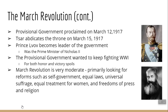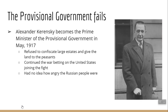The provisional government wanted to keep fighting in World War One. Even though so many people were dying, they said Russia needed to keep fighting for honor and to share in the victory spoils if the Allies won. This March Revolution was fairly moderate — mostly an upper-class or elite revolution. People wanted more self-government, equal laws, universal suffrage, rights for women, freedom of the press, freedom of religion — basic things that the rest of Europe had gotten many years ago.